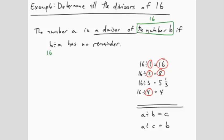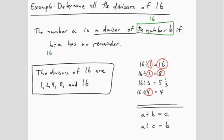When we write out our final answer, it is best to write them in increasing order. The divisors of 16 are 1, 2, 4, 8, and 16.